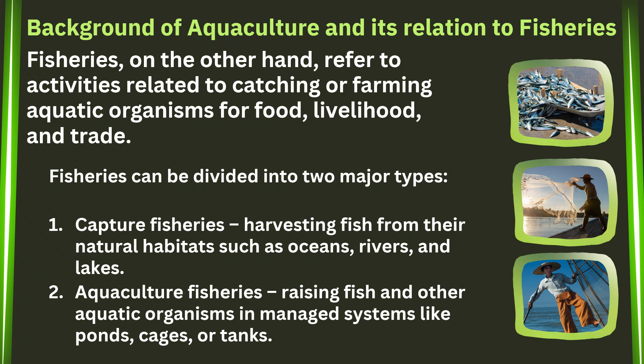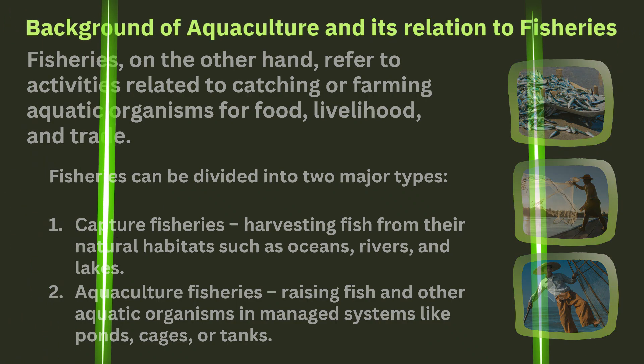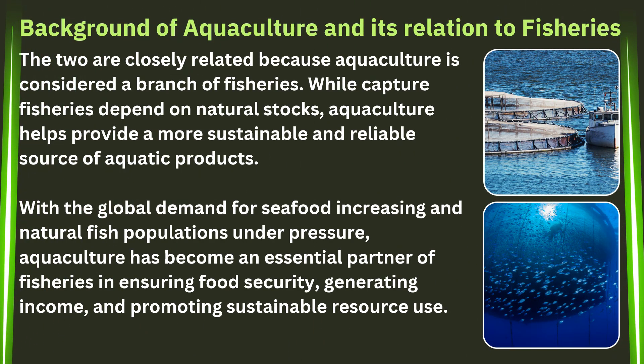Fisheries, on the other hand, refer to activities related to catching or farming aquatic organisms for food, livelihood, and trade. Fisheries can be divided into two major types: capture fisheries — harvesting fish from their natural habitats such as oceans, rivers, and lakes — and aquaculture fisheries — raising fish and other aquatic organisms in managed systems like ponds, cages, or tanks. The two are closely related because aquaculture is considered a branch of fisheries. With the global demand for seafood increasing and natural fish populations under pressure, aquaculture has become an essential partner of fisheries in ensuring food security, generating income, and promoting sustainable resource use.